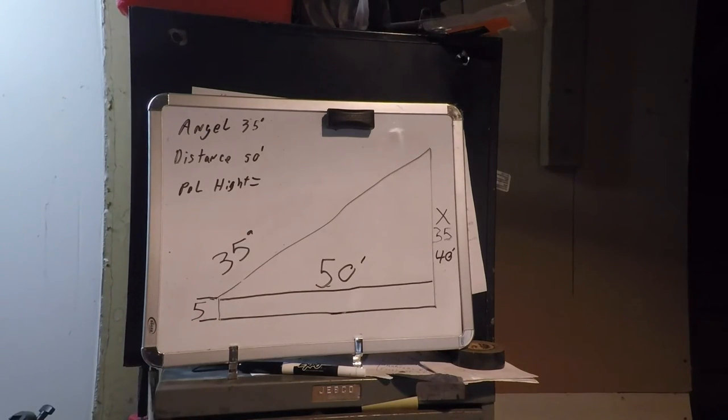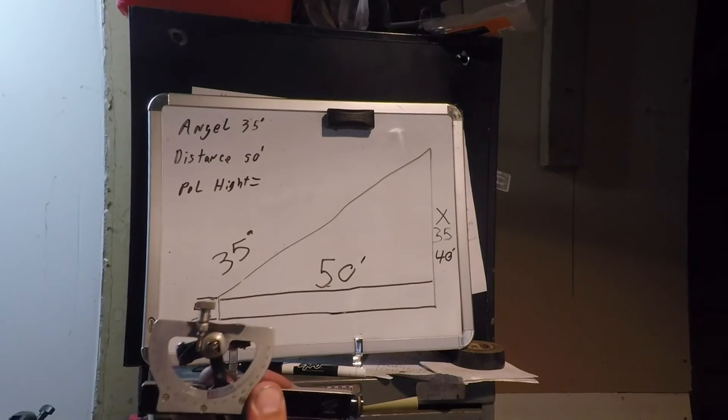And you have this protractor. Something you can do here in the shop, let's say you want to drill a hole at an angle, say I don't know, maybe like a kind of a weird angle, let's do like 19 degrees. So if you've got your drill press set up.